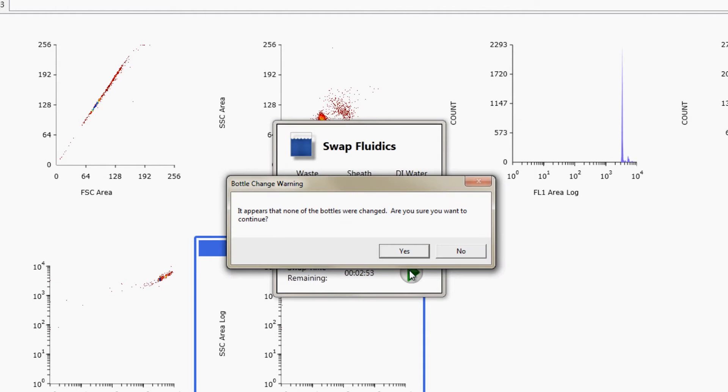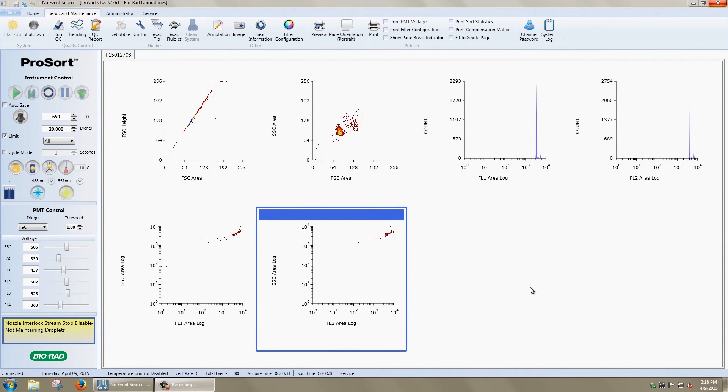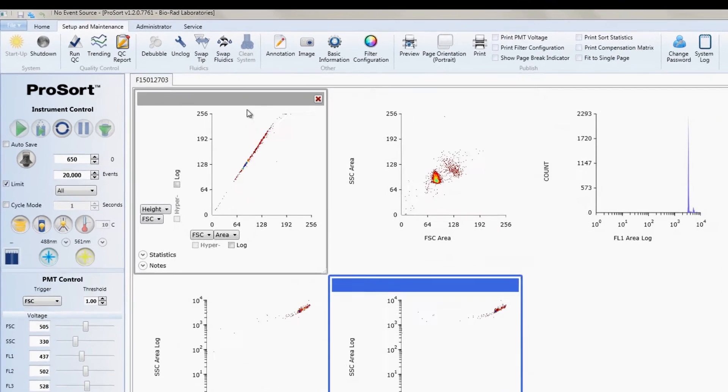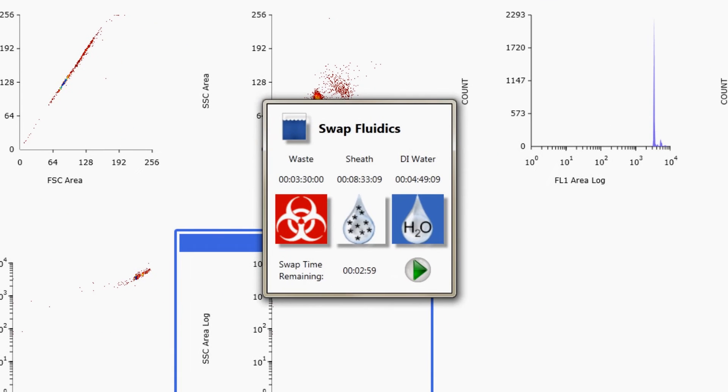If you haven't prepared your bottles in advance, click the green arrow. The software will detect that you haven't swapped the bottles and ask if you are sure you want to proceed. Clicking Yes will stop the timer so you can continue your run while you prepare your new fluid bottles. Once you have everything in place, you can click the Swap Fluidics button again to restart the hot swap timer.